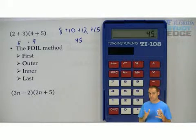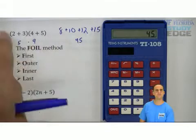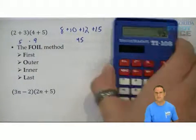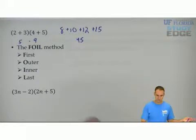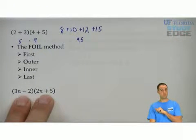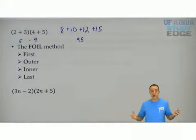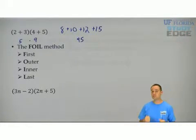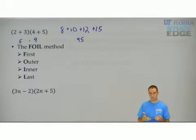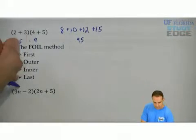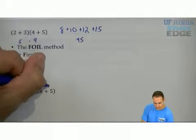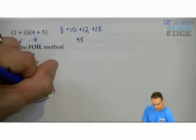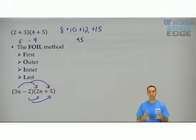Of course, you're thinking you'd never do that — you'd just do 5 times 9 is 45, which is great. But what if the terms aren't numbers you can simplify? Like 3n minus 2: those are not like terms, you can't combine them. So in this case, we're going to distribute twice, which we call FOIL. We take 3n and multiply to each term in the other set of parentheses, and then negative 2 and multiply by each term in the other set.